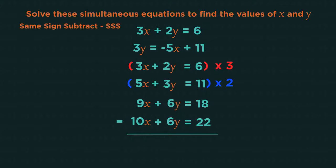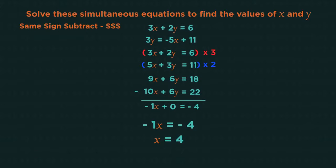Remember, same sign subtract. Both are plus 6y. So we subtract the equations. 9x minus 10x is minus 1x. Plus 6y minus 6y is 0. 18 minus 22 is minus 4. Solve for x means x is 4.